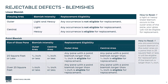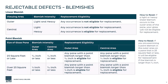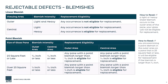Going back to our example, if you found a point blemish on your window and calculated that it is smaller than 25 square feet, and identified the point blemish is located within the central viewing area and is larger than 1/16 inch in diameter, that window would be eligible for replacement.